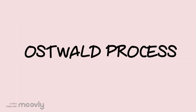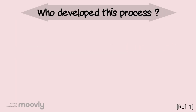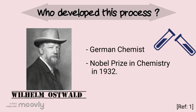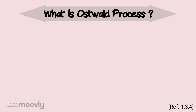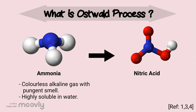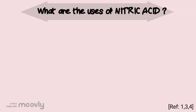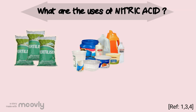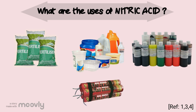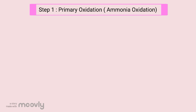Ostwald process: who developed this process? Wilhelm Ostwald, a German chemist who received the Nobel Prize in 1932. The Ostwald process uses ammonia — a colorless alkaline gas with pungent smell, highly soluble in water — to manufacture nitric acid. Uses of nitric acid include fertilizers, plastics, dyes, and explosives like TNT.